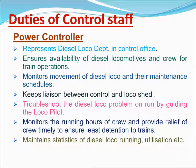The Power Controller represents the diesel loco department in the control office. Ensures availability of diesel locomotives and crew for train operations. Monitors movement of diesel locos and their maintenance schedules. Keeps liaison between control and loco sheds. Troubleshoots diesel loco problems on run by guiding the loco pilot. Monitors running hours of crew and provides timely relief to ensure least detention to trains. Maintains statistics of diesel loco running and utilization.